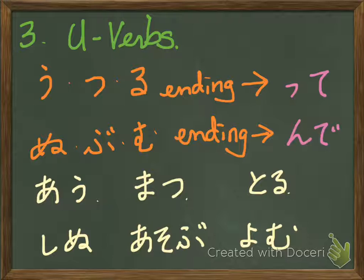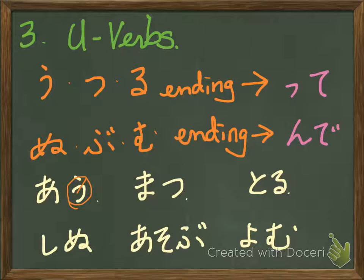Lastly, u-verb. The u-verb endings vary, so you need to memorize the conjugation patterns. For u, tsu, and ru endings, you change the last sound to tte. For example, au — this is a u-ending — you change u to tte.